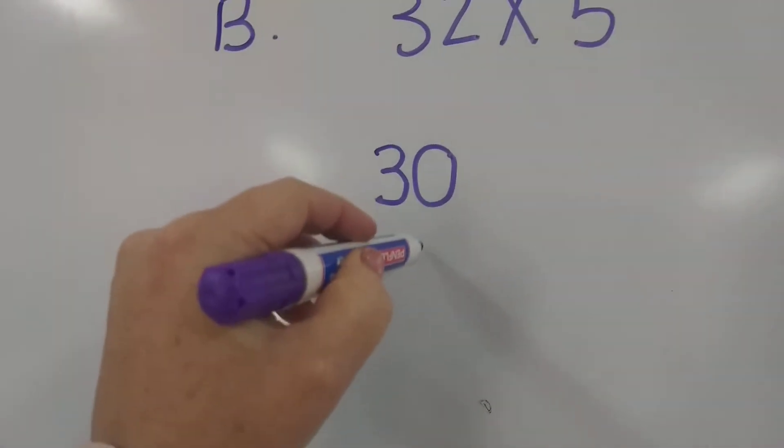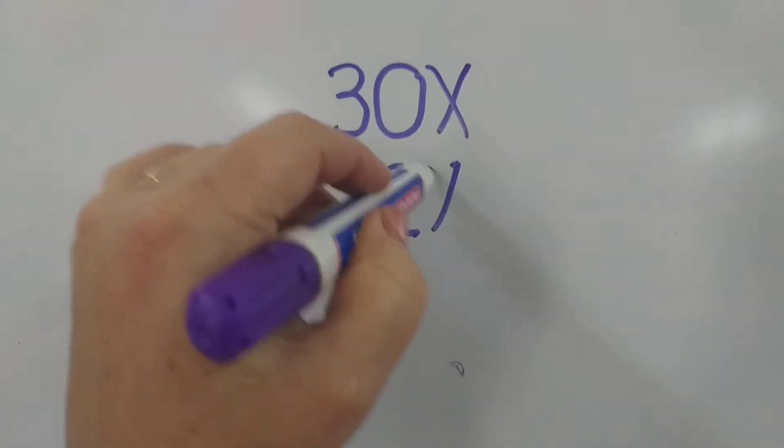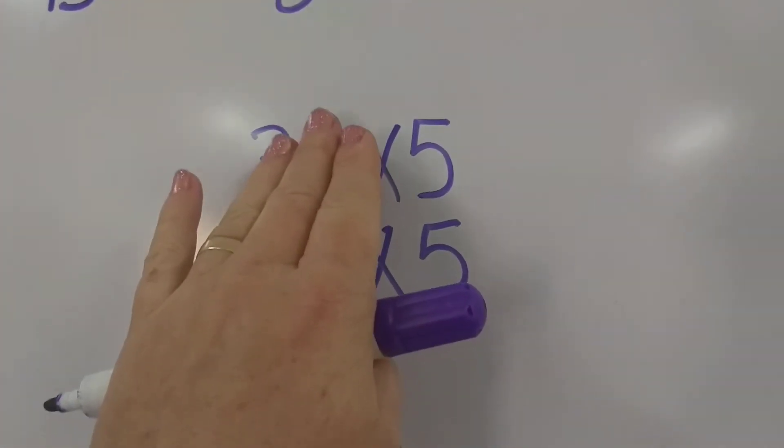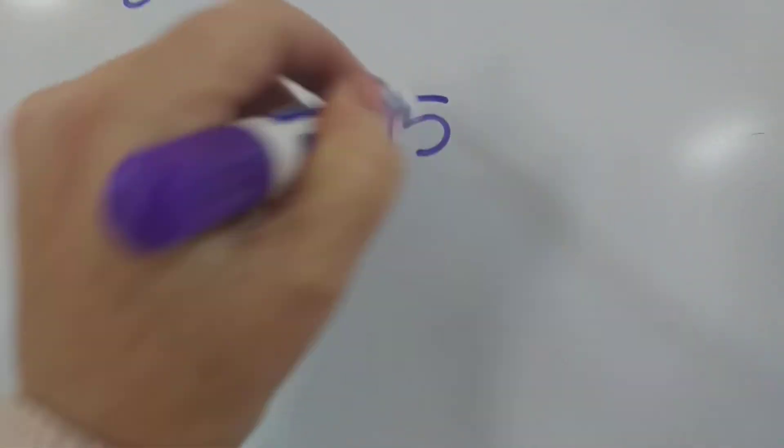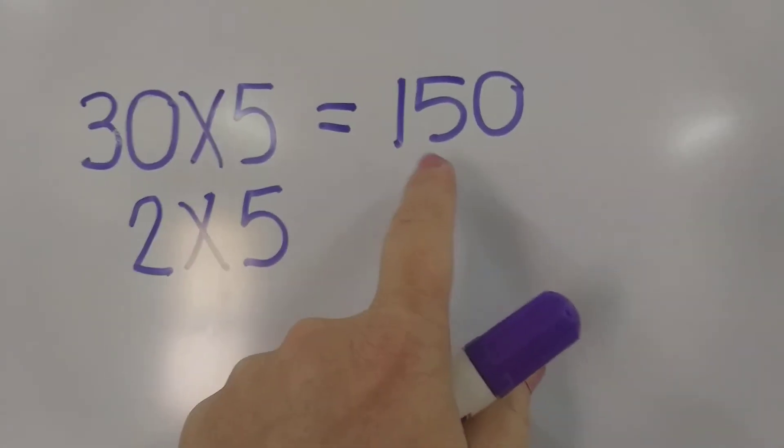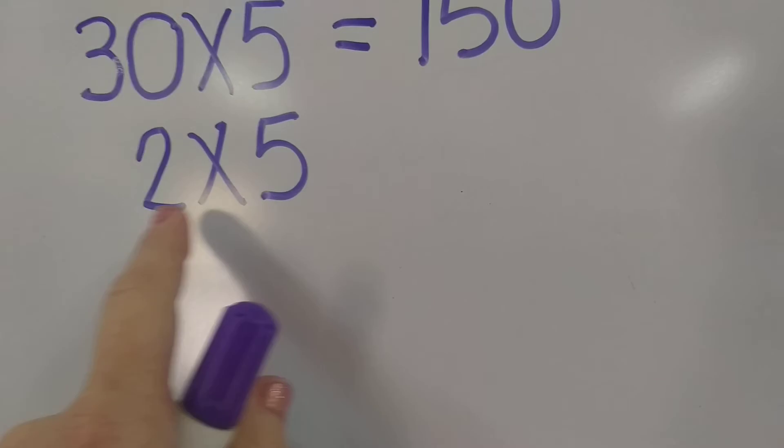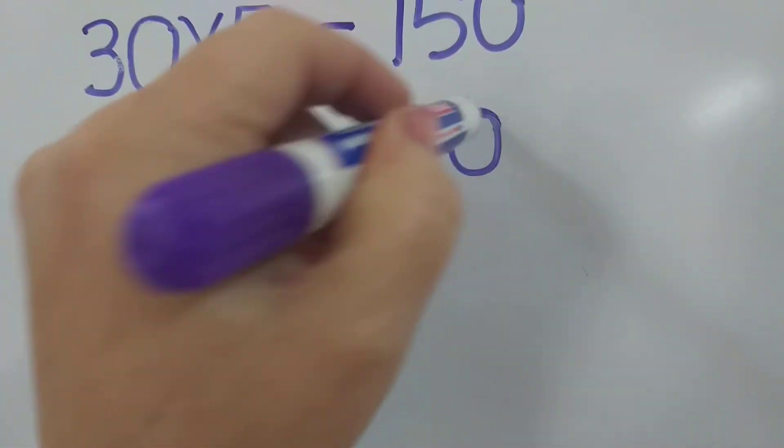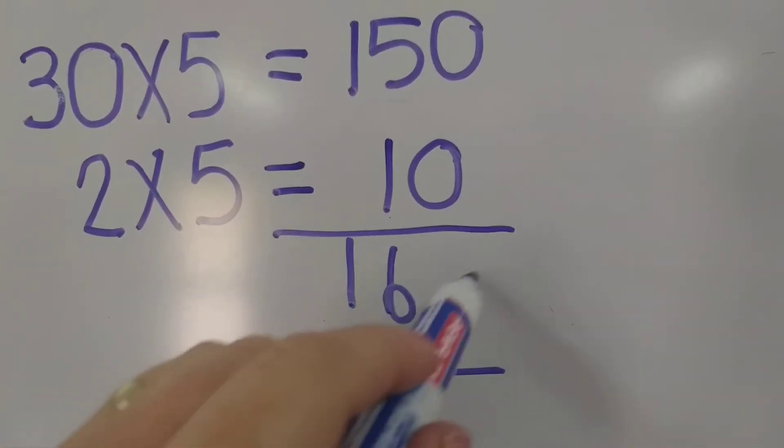So you're going to go 30 and 2, and then you're just going to times each by 5. 30 times 5, come up at 0. 3 times 5 is 15. Don't forget to add the 0. It's little things like that, Kyla, that you're forgetting. You don't have 15, you have 150. Then 2 times 5 is easy peasy 10. You're going to add those two amounts together and you're going to get 160.